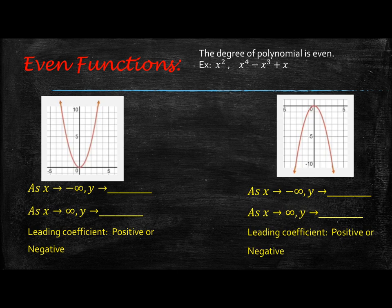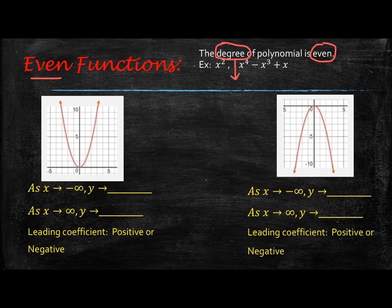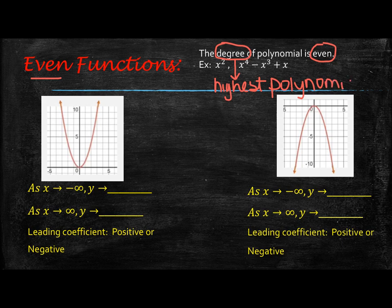These two graphs are representative of what we call even functions. When I'm saying even functions, that means the degree of the polynomial is even. The degree is the highest exponent of the polynomial. So when looking at the equation, we just look for the highest exponent. If the highest exponent is an even number — like two, four, six — then both ends, the left and the right side, are going to be going in the same direction. Examples of even functions: x squared, or x to the fourth minus x to the third plus x, because the highest exponent is four.